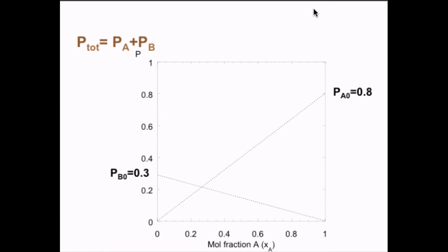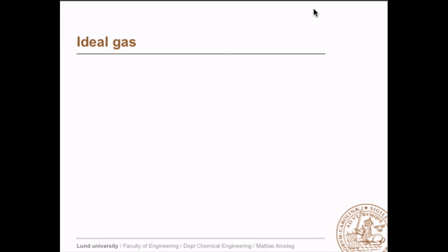The total pressure is simply the sum of the two partial pressures. Now let's look at the gas part. For an ideal gas we have Dalton's law which states that the partial pressure of A equals the total pressure times the molar fraction of A in the gas phase.